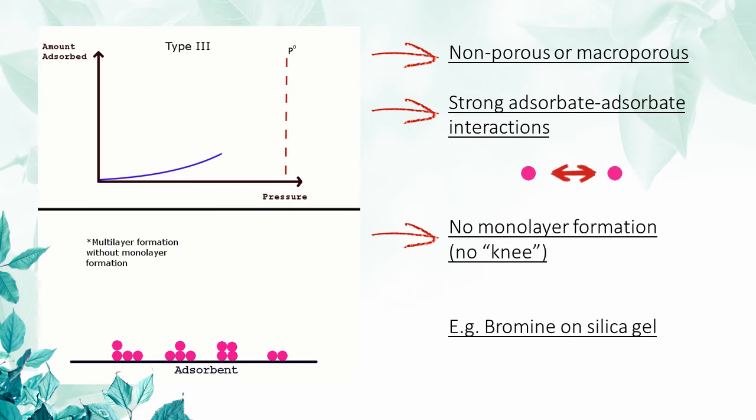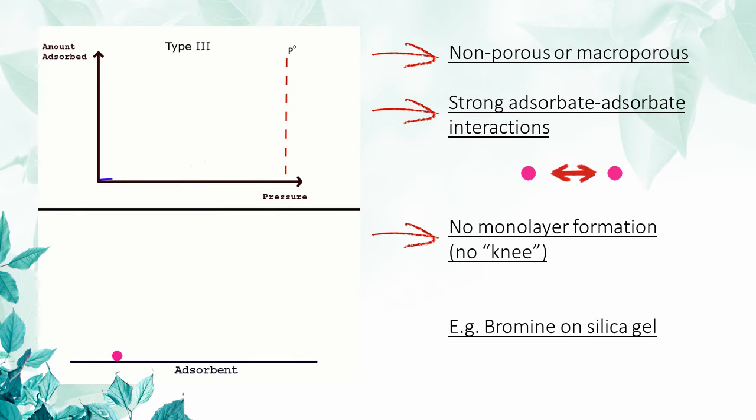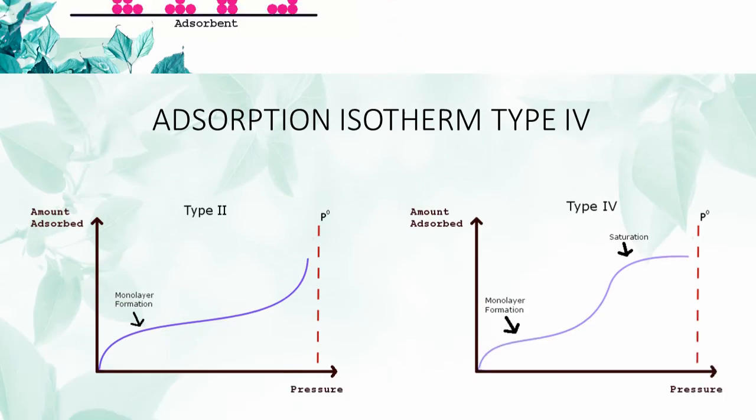Note that multilayer adsorption occurs without the formation of a monolayer. An example of a type 3 adsorption isotherm is the adsorption of bromine on silica gel.